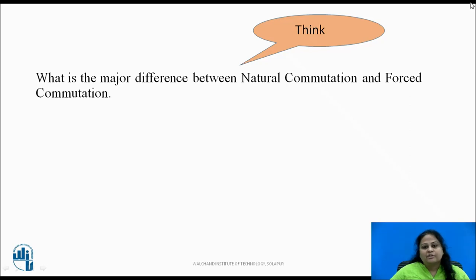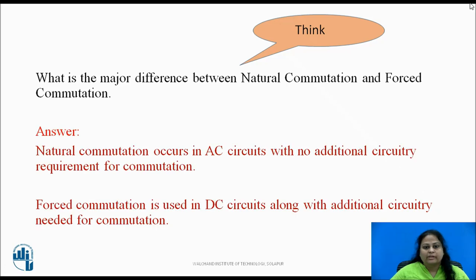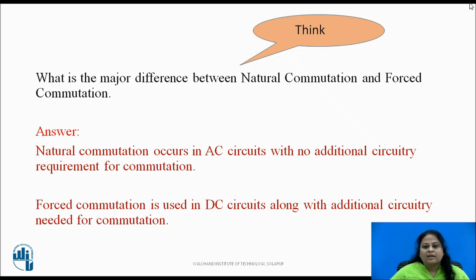Pause the video and think: what is the major difference between natural commutation and forced commutation? The major difference is that natural commutation occurs in AC circuits with no additional circuitry requirement for commutation, whereas forced commutation is used in DC circuits along with additional circuitry needed for commutation.